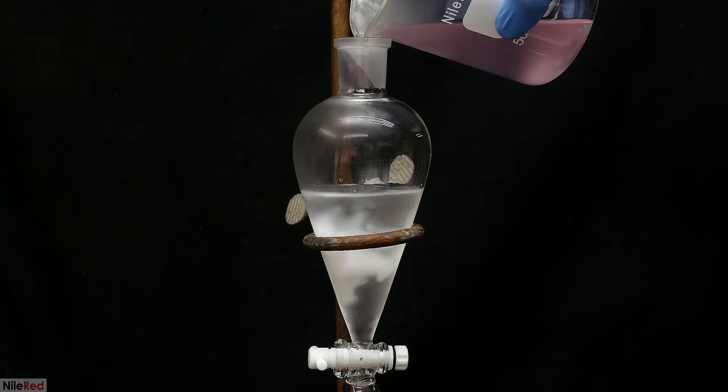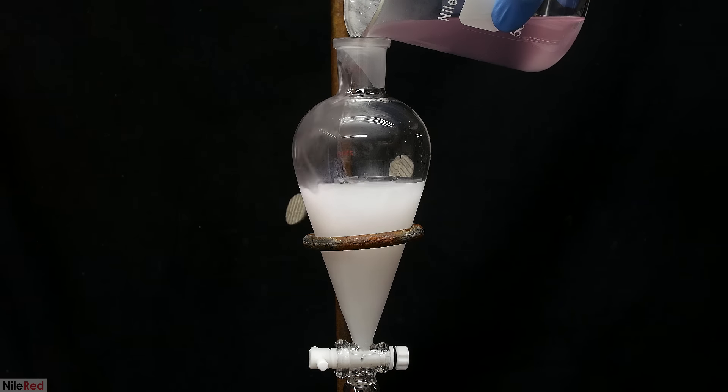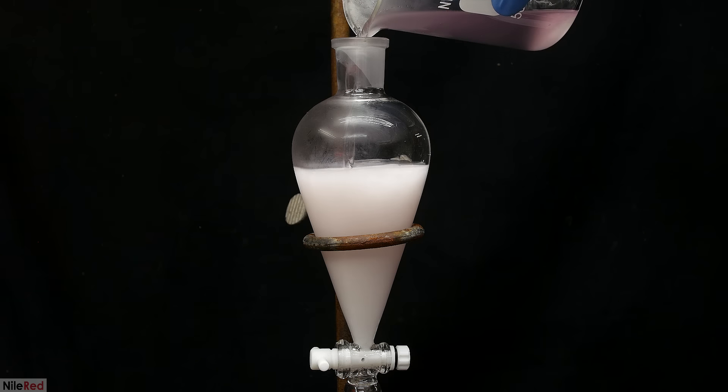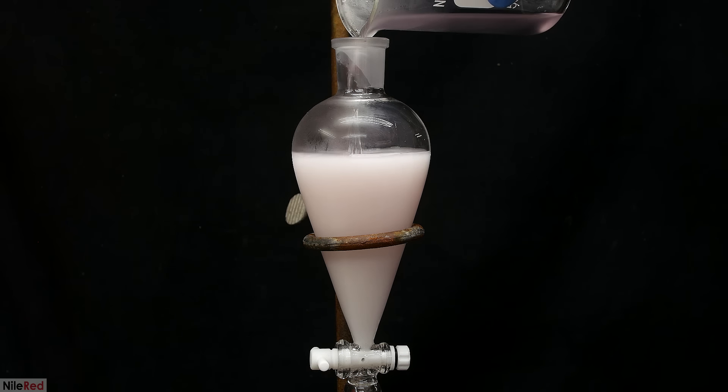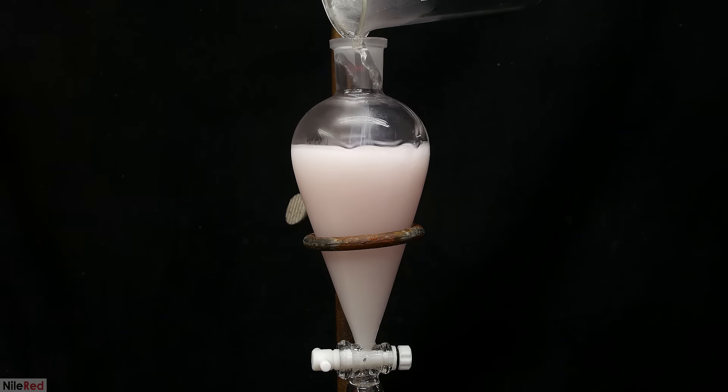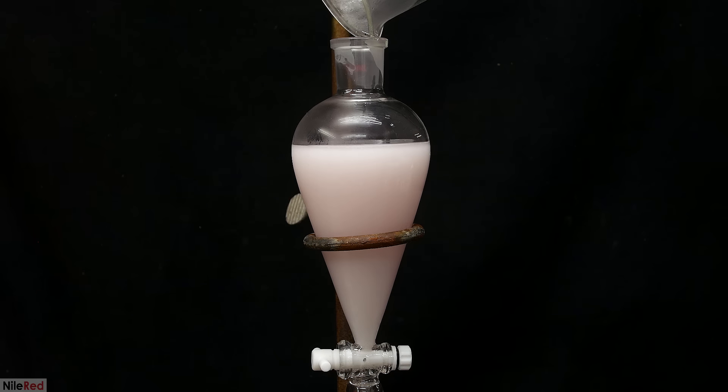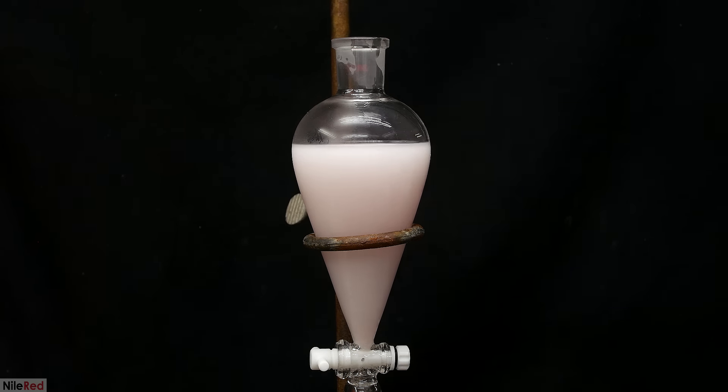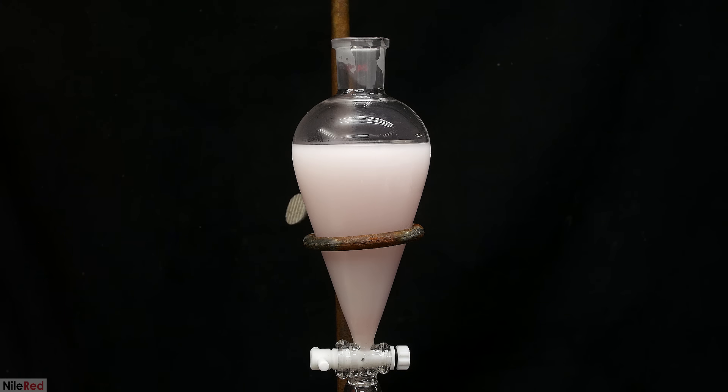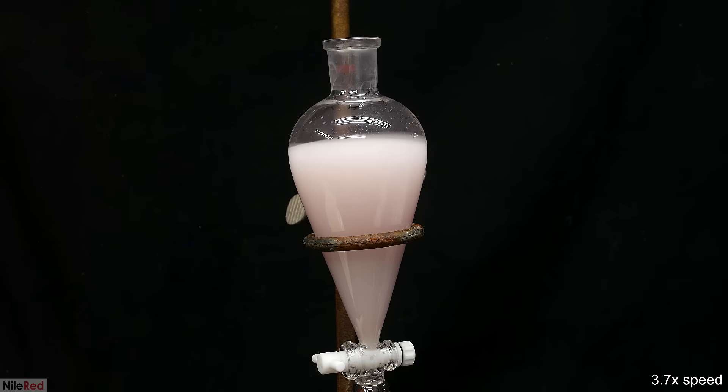While still hot, it's transferred to a separatory funnel that has 100 milliliters of ice cold water in it. The moment it's added, a lot of white precipitate falls out of solution, and this is just unreacted starting material. The wintergreen also separates out and sinks to the bottom, but you can't really see it here. To really mix things around, the separatory funnel is capped and shaken, and then it's put back on the stand, and I wait for the layers to separate.